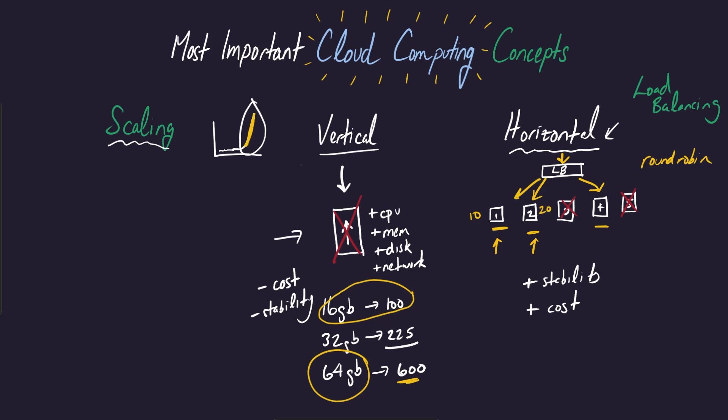So say your first instance has like 10 connections, your second instance has 20, your third instance over here has 30. Then your traffic would be directed to the one with the least number of connections.